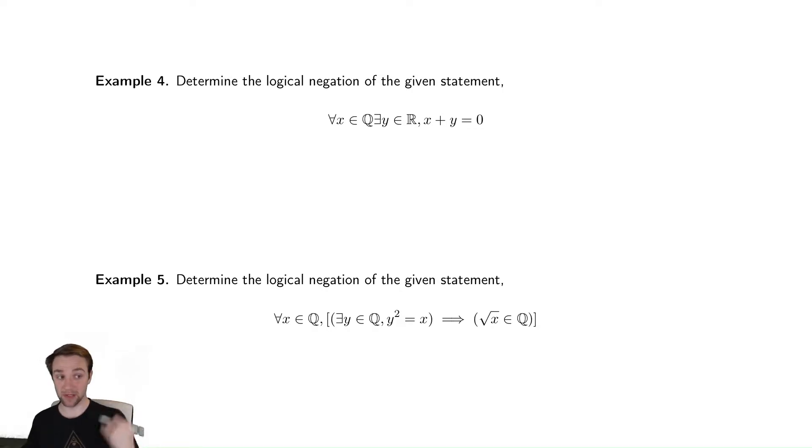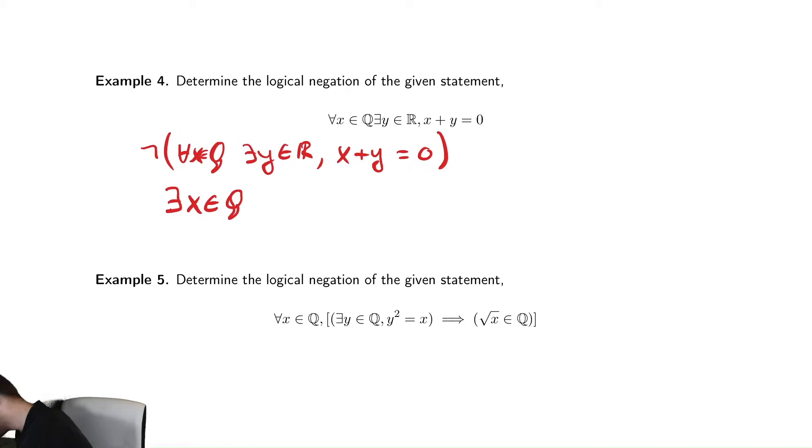So it says determine the logical negation of that statement. To do this, I mentioned this earlier, we talk about sliding quantifiers. We're going to say not for all x in the rational numbers, there exists a y in the real numbers such that x plus y is equal to zero. The way a lot of people visualize this is you slowly move the negation inside. So earlier we said the opposite of a for all is that there exists. So we change that for all x in Q into there exists an x in Q. And then if there exists a y, we're just going to put the negation next to that and deal with it later.